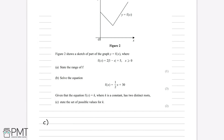For part c, given that the equation f of x equals k, where k is a constant, has two distinct roots, we must state the set of possible values of k. Since k is just a number — a horizontal line — having two distinct roots means it has to cross the graph of y equals f of x twice. For example, if k is at a certain height, we can see it intersects the graph at two points, making it a possible value of k.